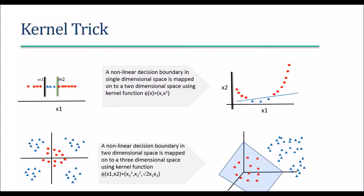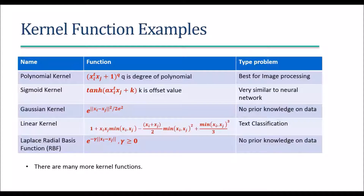There are many standard kernel functions. For image processing problems we often use a qth-degree polynomial kernel function. We can also use a sigmoid kernel function, which makes it very similar to a neural network. When we have no prior knowledge about the dataset, we can use the Gaussian kernel function.